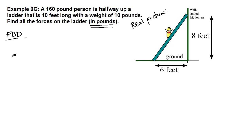So we have a person who is standing on a ladder, and each of those things, person and ladder, has a different weight. So FG of the ladder is 10 pounds, and FG of the person is 160 pounds.